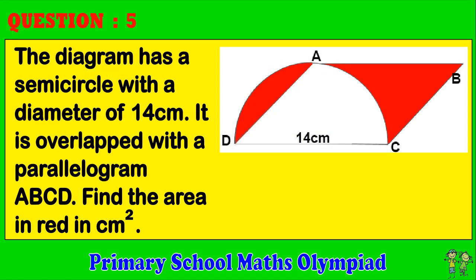Question 5. The diagram has a semicircle with a diameter of 14 centimeters. It is overlapped with a parallelogram ABCD. Find the area in red in centimeters squared.